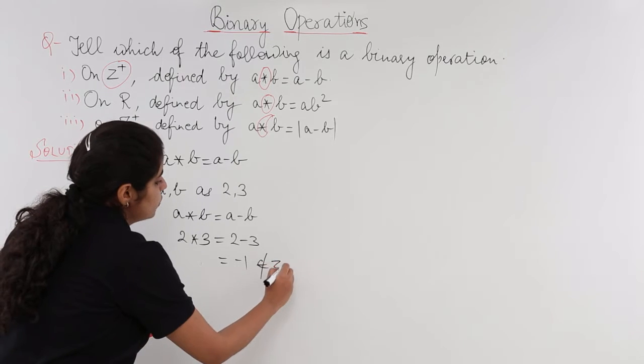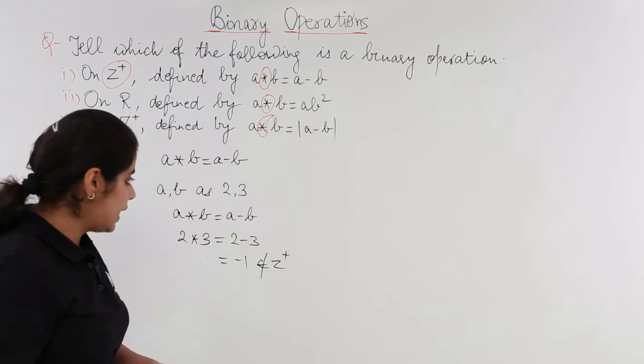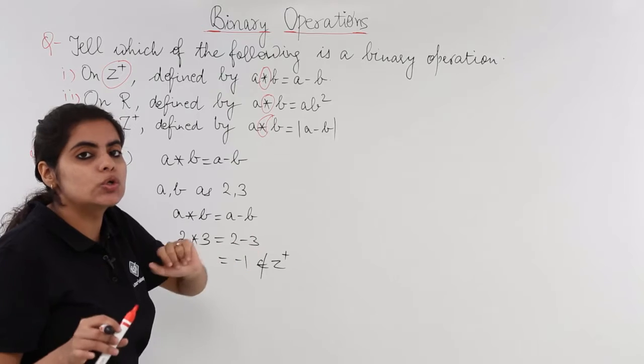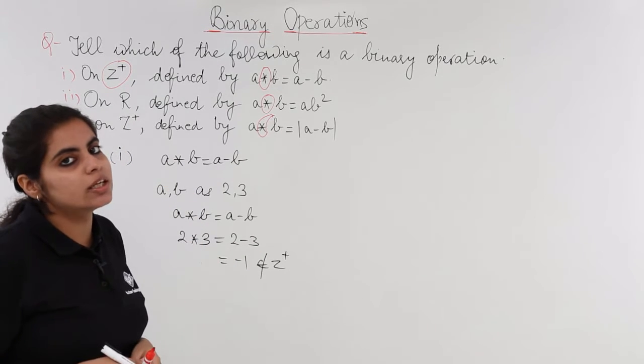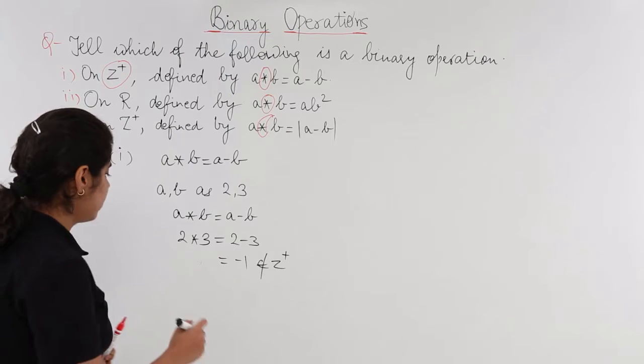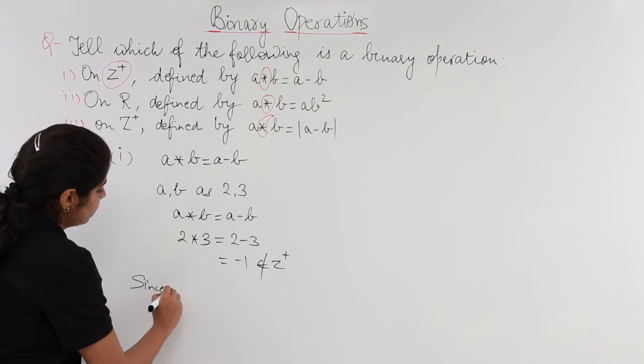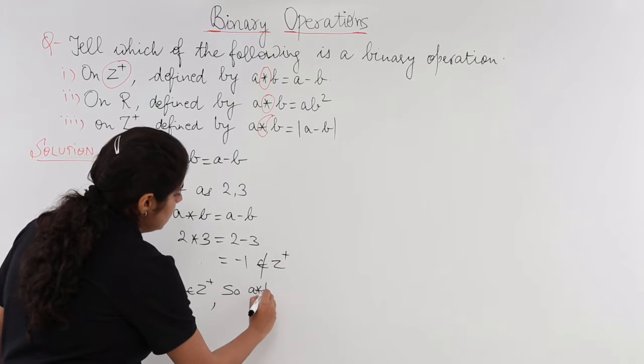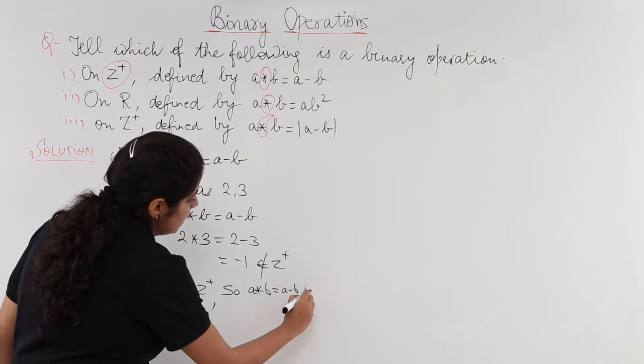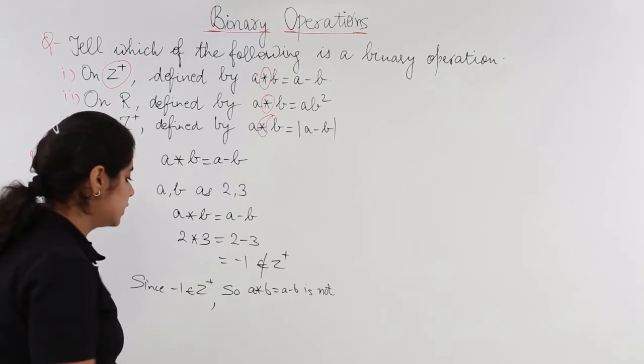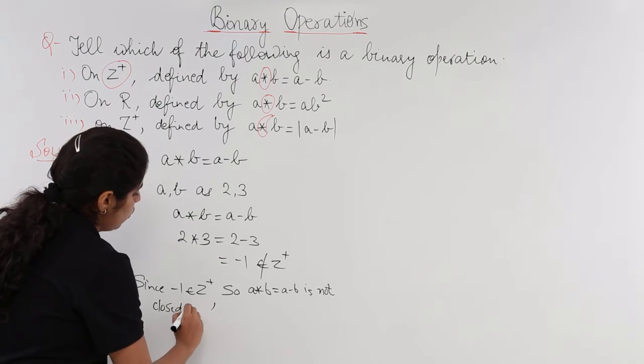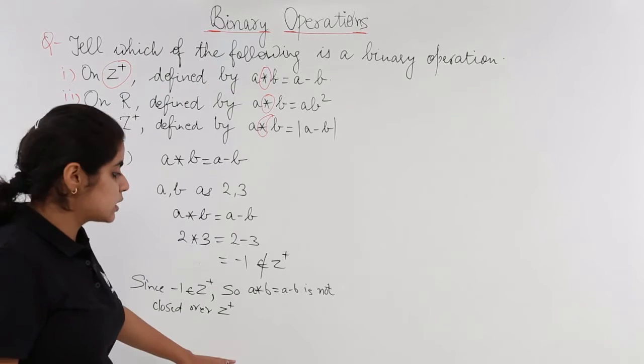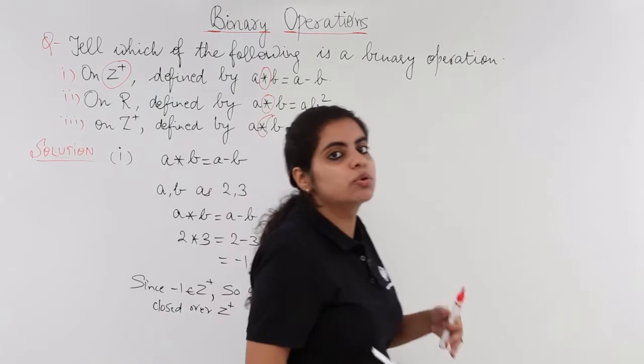So minus 1 does not belong to Z positive. So since we have the minus operation, the minus operation not closed over Z positive. So this is not a binary operation. So we can write it down as since minus 1 does not belong to Z positive, A star B is equal to A minus B is not binary operation or is not closed over Z positive. So this was the first solution, the first part as to how to go about it.